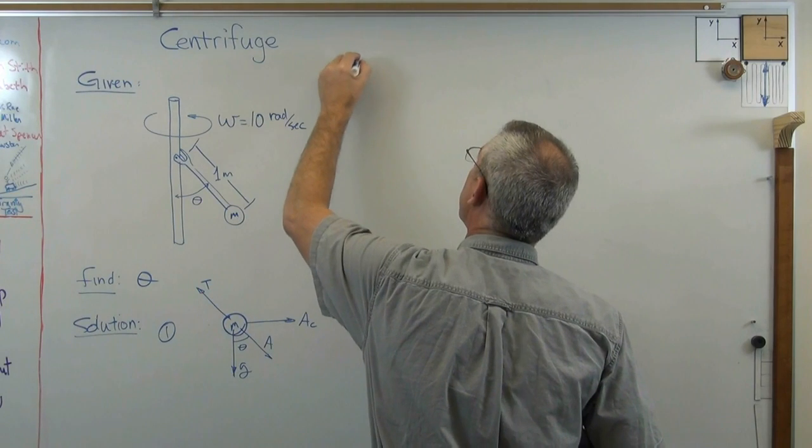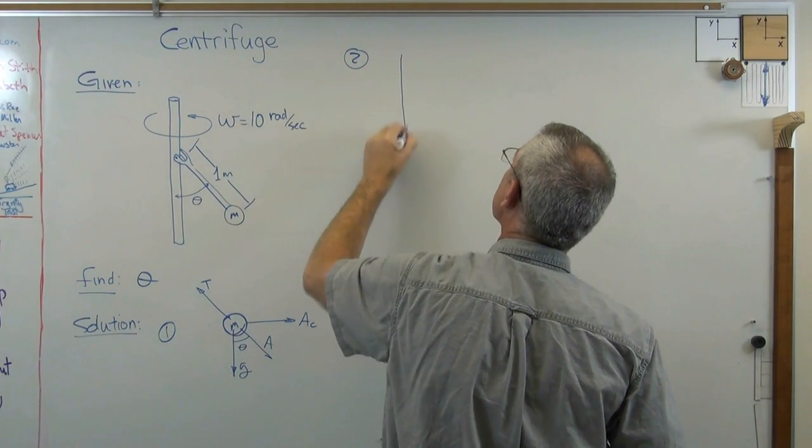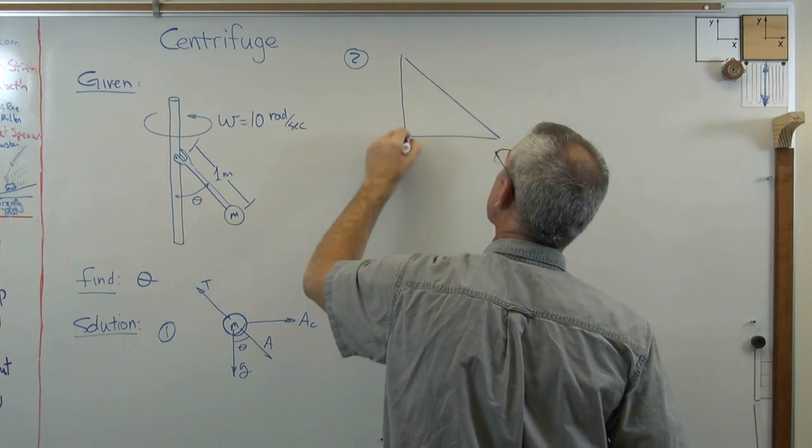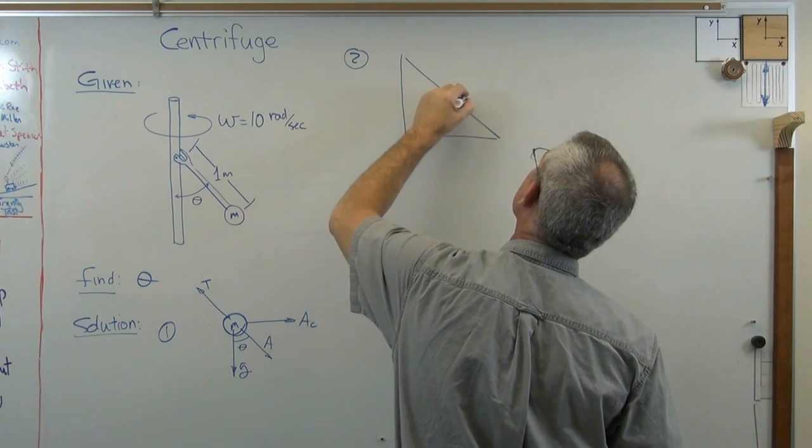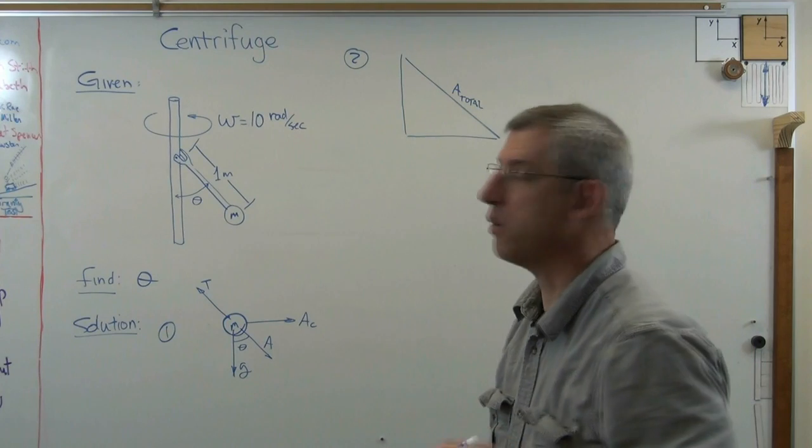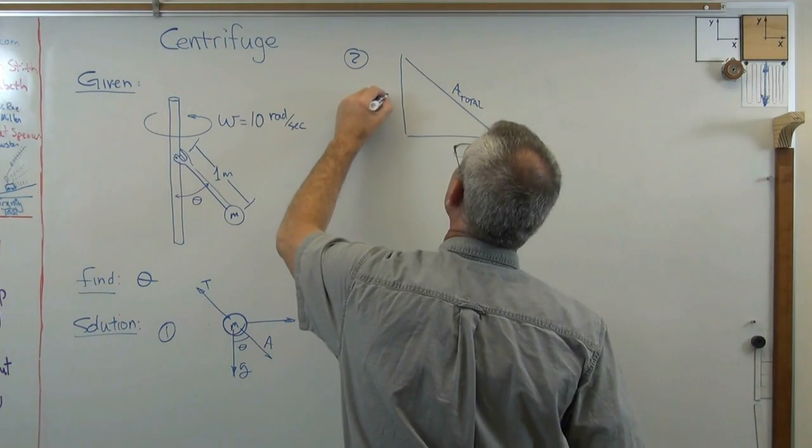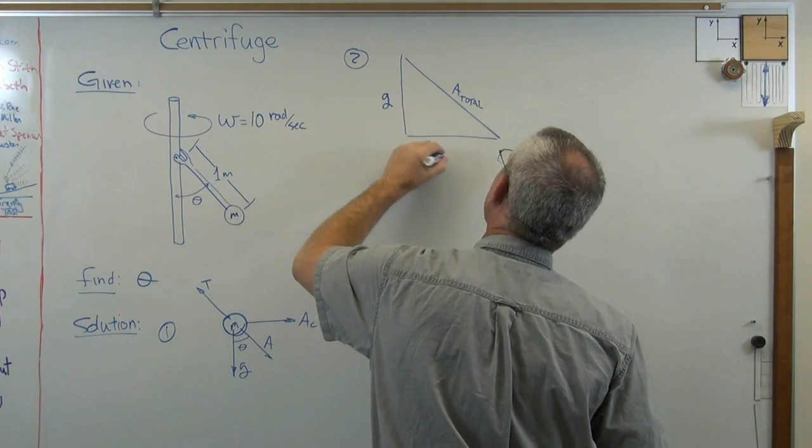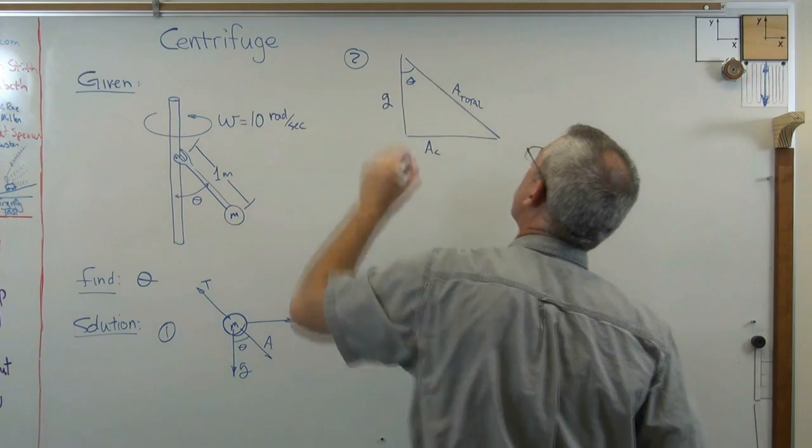Okay, step two. Let's hang some numbers on this and draw ourselves an acceleration triangle here. We don't need to know what a total is. There's G and there's a sub c and that's theta.